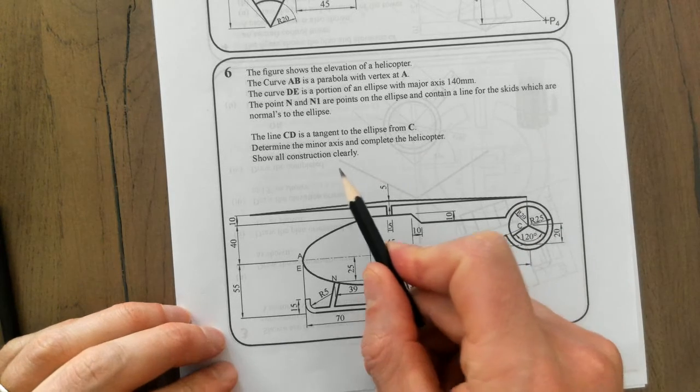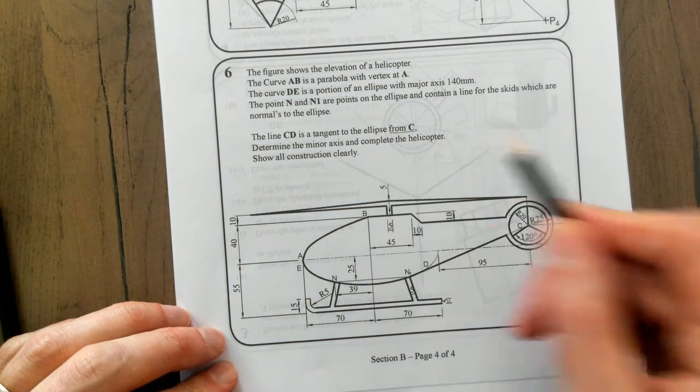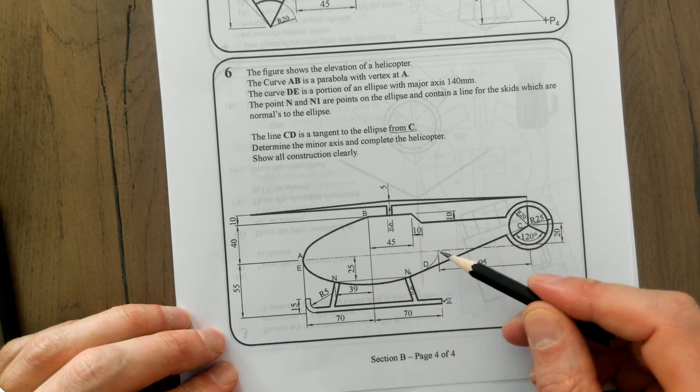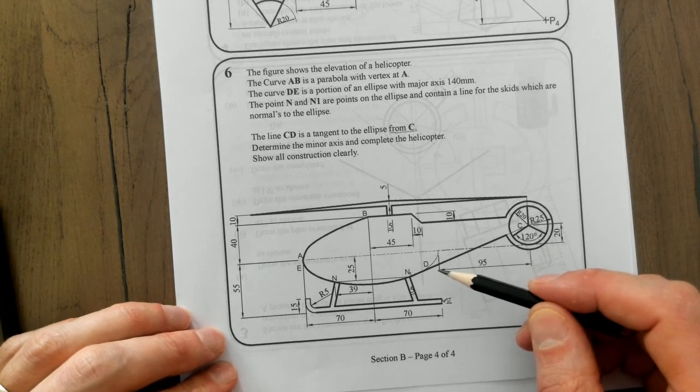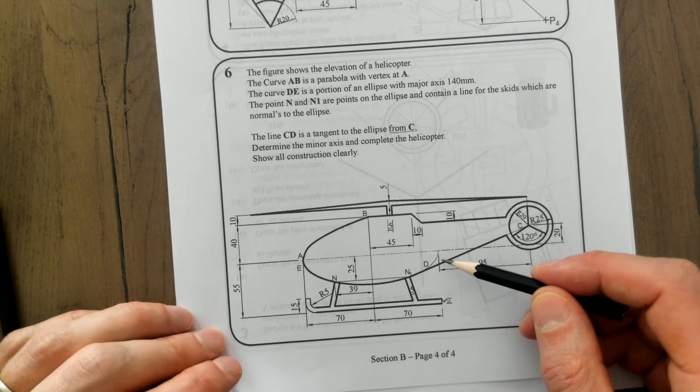This is applicable for this question here. The line C is the tangent to an ellipse from C. Okay, so C is here. This is the ellipse. You have to show your workings and there's a step-by-step guide on page 209 of your textbook. But I'm going to run through it now.